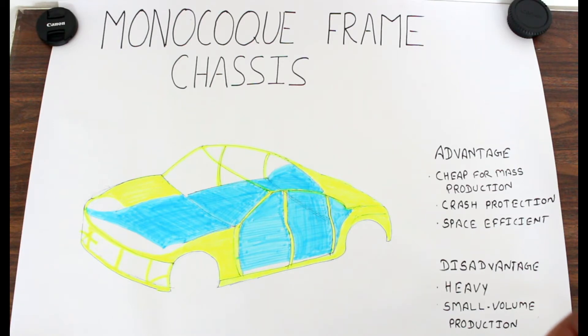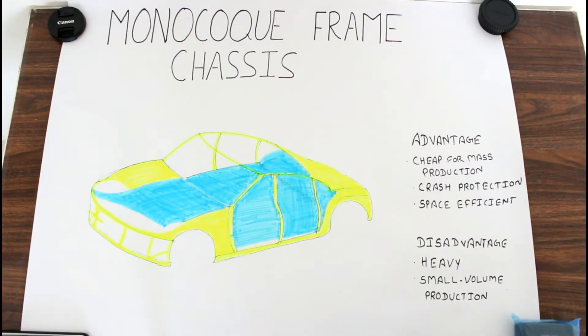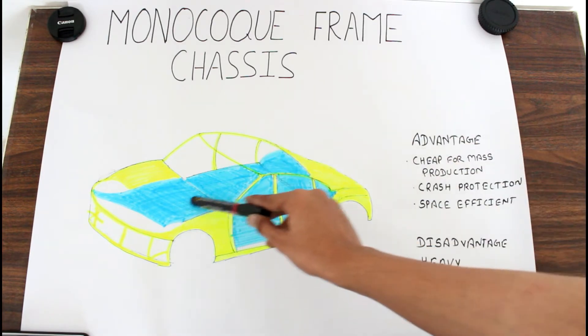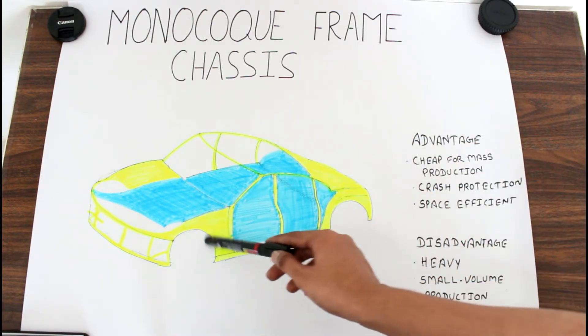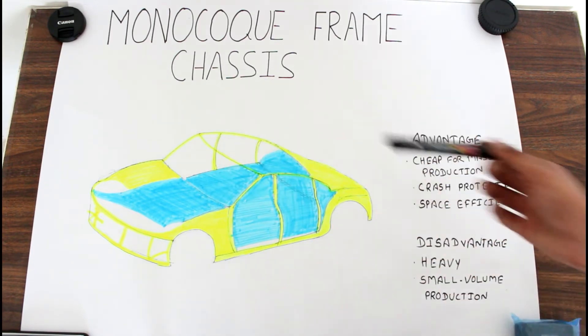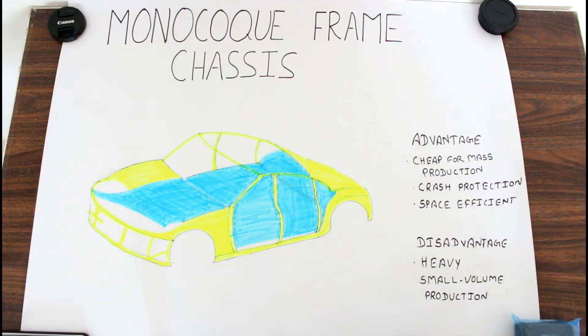In the monocoque chassis, the body is already incorporated with the chassis in a single piece. Unlike the ladder frame chassis where we have longitudinal members and several cross members, the monocoque frame chassis does not need any longitudinal or cross sections. Here, the blue color shows the inner part of the chassis and the green color shows the outer part.